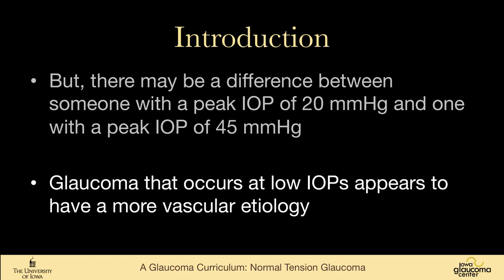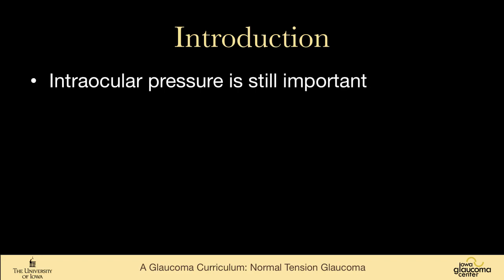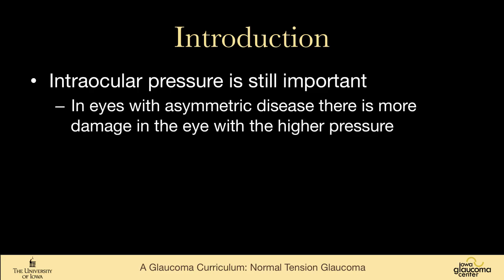It seems that glaucoma that occurs at lower intraocular pressures is more of a vascular etiology than glaucoma that occurs at higher pressures. And even though it's normal tension glaucoma, the intraocular pressure is still important. In eyes that have asymmetric disease, there is more damage in the eye with the higher pressure.